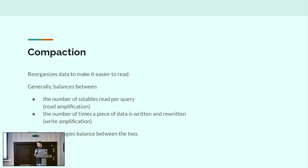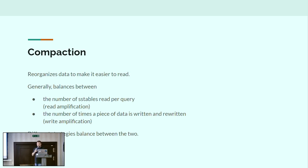Generally, compaction has to balance between two things: the number of SSTables we have to consult when we read a piece of data, and also the number of times every piece of data that enters the system has to be rewritten — written to the memtable and commit log once, then written again when we flush it, then written again when we compact a few SSTables into a different one. How many times we do this actual compaction is the write amplification.